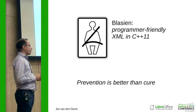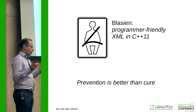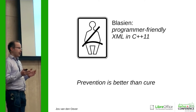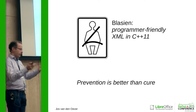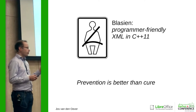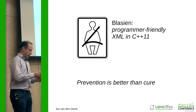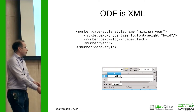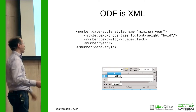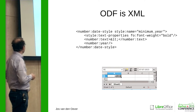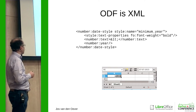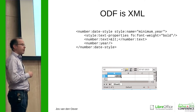What we're going to talk about is a way of writing C++ so that you can have safe writing of XML — so that you're sure you are writing valid XML, which is kind of a problem at the moment. ODF is XML, as you all know. Here's a small fragment of XML from ODF, and this is going to be our example in this presentation.